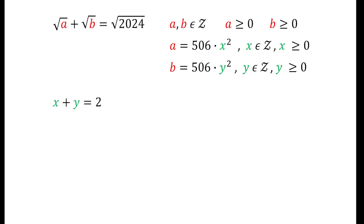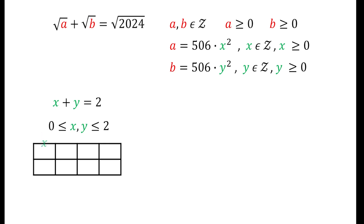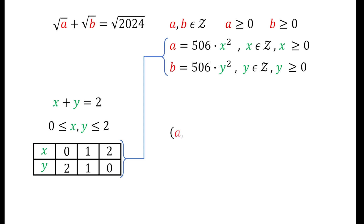Since x and y are non-negative integers and x + y = 2, both must be between 0 and 2. We write a table of possible values: if x = 0 then y = 2; if x = 1 then y = 1; and if x = 2 then y = 0.